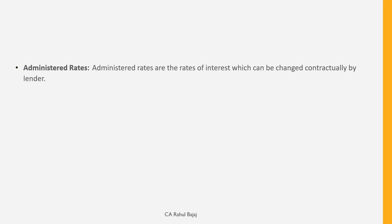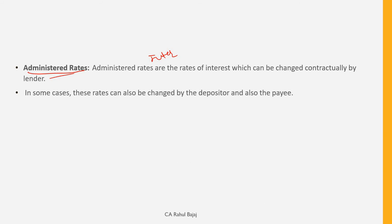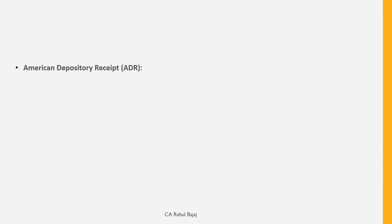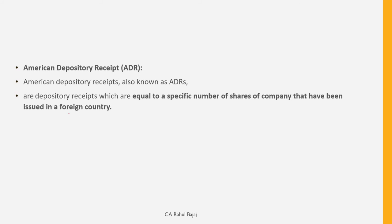The next concept is Administered Rate. This is an interest rate or deposit rate that is governed by some law or provision. Some law or provision administrates it — for example, rules about farmer loans, student loans, or the interest rate senior citizens must receive on deposits. Some law, provision, or guidance administers and monitors these rates.